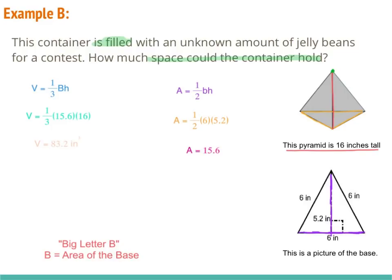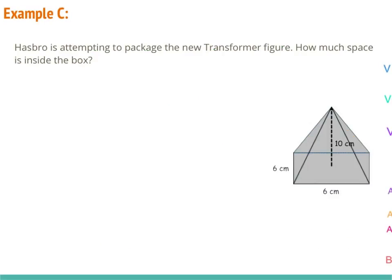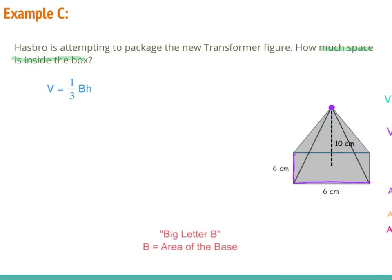This example says Hasbro is attempting to package a new transformer figure — how much space is inside the box? Since they're asking about space inside the box, we're talking about volume. Since it comes to a point at the top, we're talking about a pyramid. However, unlike the previous pyramids whose base was a triangle, this time the base appears to be a square or rectangle, and our volume formula for a pyramid is still one-third big B times H.